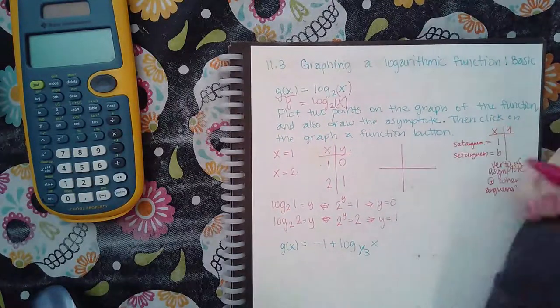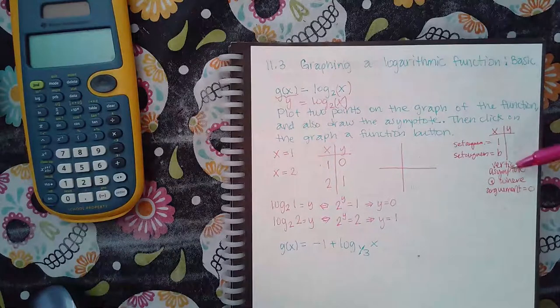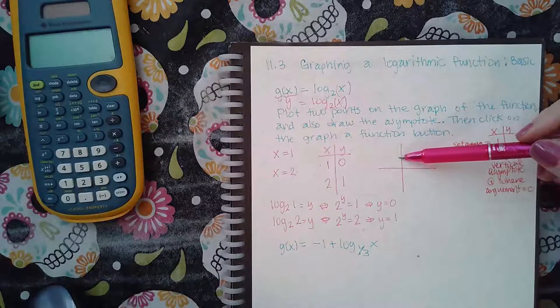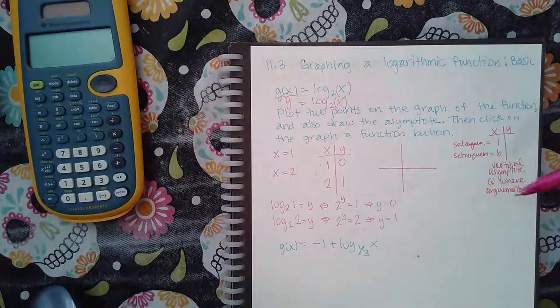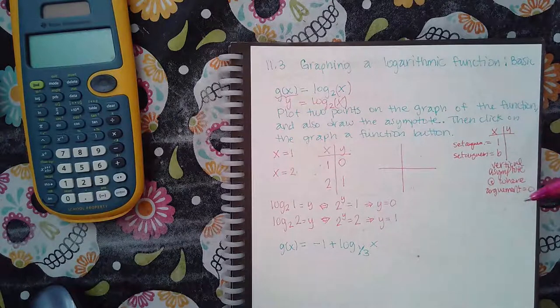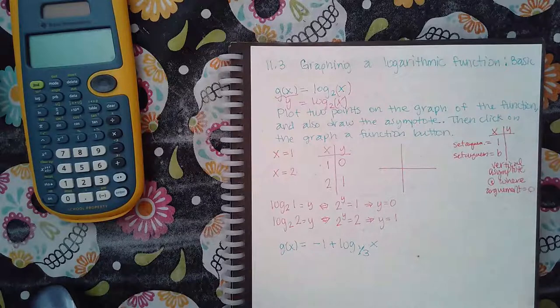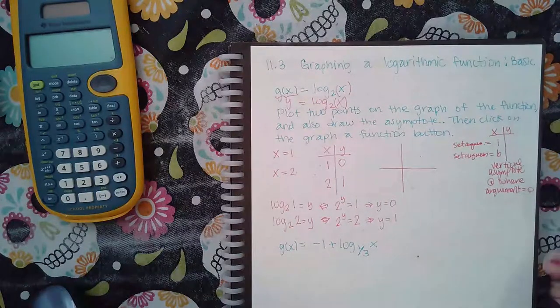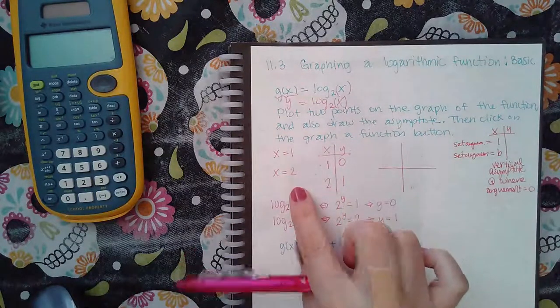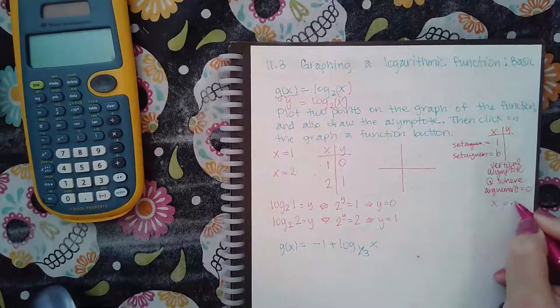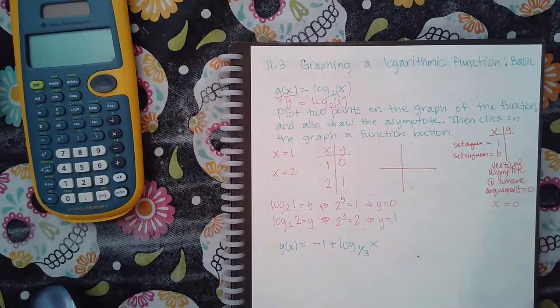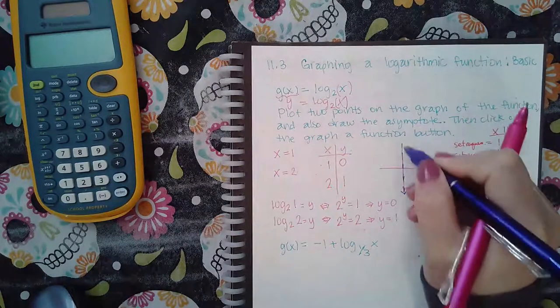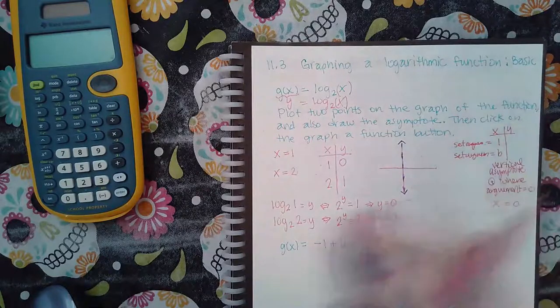And if I draw my asymptote, your asymptote is always going to be a vertical asymptote at the y-axis. The only time that that will move is if your argument shifts. So if your argument had a plus a number or minus a number, it's going to shift it to the left or to the right. So how do you figure out where it should be? Set your argument equal to zero, which I haven't done yet. So my argument is x, and if I equal that to zero, I just have the equation x equals zero. Well, guess what? That is the y-axis.